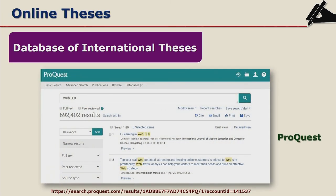ProQuest Theses and Dissertations is a database of dissertations and theses whether published electronically or in print. Access to this database may be limited and available for purchase, so you have to consult your library for access. There are also some free resources available under ProQuest in social sciences, humanities, sciences, and technology, though this is primarily a paid database of international theses.